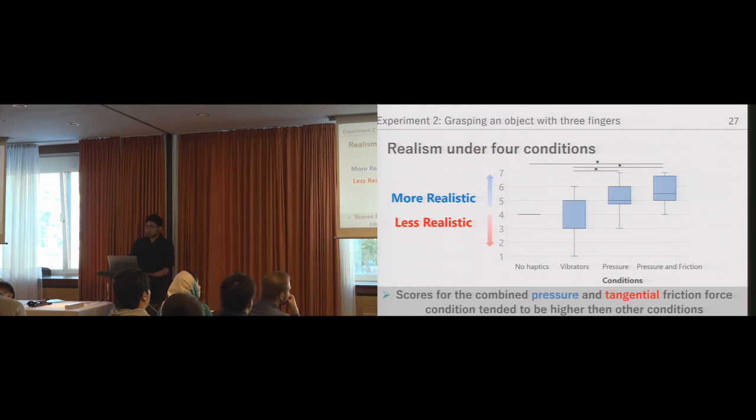Comparing the vibration and force conditions, the reality was greatly improved when haptic sensation was presented by the device. Although the difference was not significant, scores for the combined pressure and tangential friction force condition tend to be a little bit higher than the pressure only condition. In our previous study using two fingers, the pressure only condition scored higher than the combined pressure and tangential force condition. But we believe that this difference was caused by increasing the number of fingers in this experiment and the sense of discomfort between pressure and tangential friction force was reduced by adjusting the timing and strength of presentation.